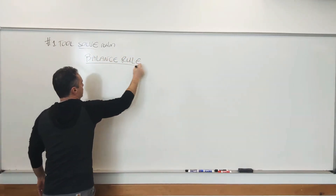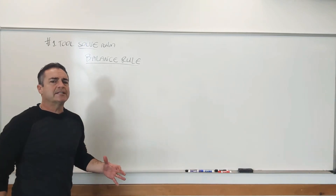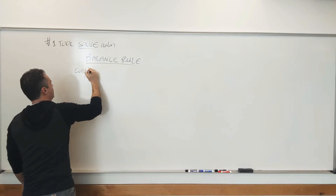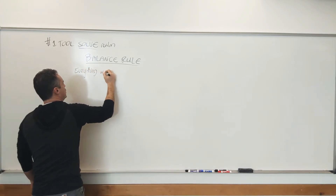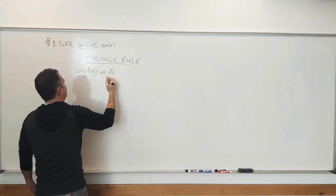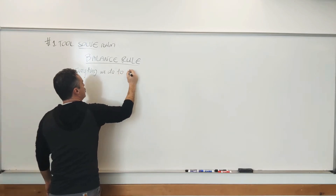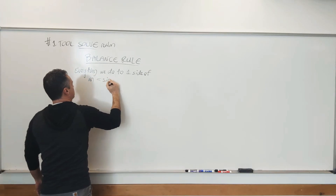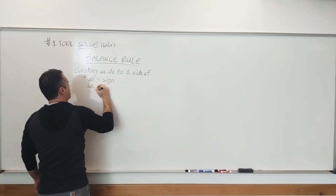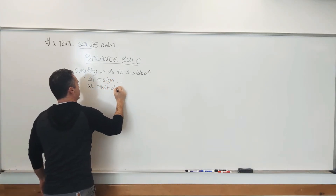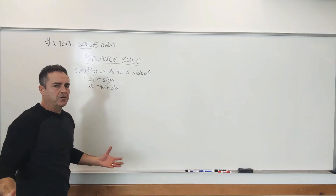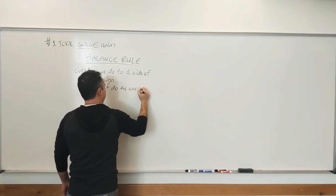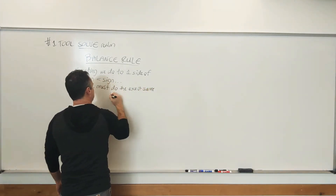Now many of you are familiar with this rule. It's not just a mathematical rule, it's a scientific rule. And it basically says that everything we do to one side of an equal sign, we must do the exact same to the other side.